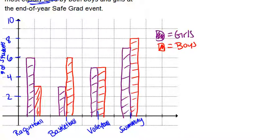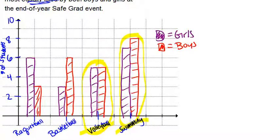There we have our double bar graph. The question was: what are the two sports that are most equally liked? We should be looking for the two sports where girls and boys are closest. Volleyball shows complete agreement, and swimming where they're only one off. Both basketball and racquetball were more strongly preferred by one gender over the other. So she should go for volleyball and swimming.